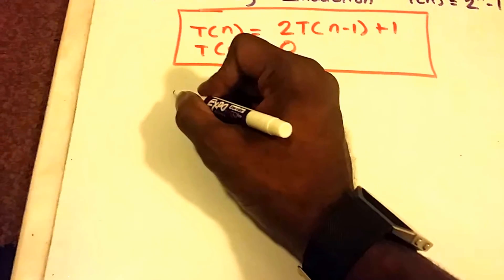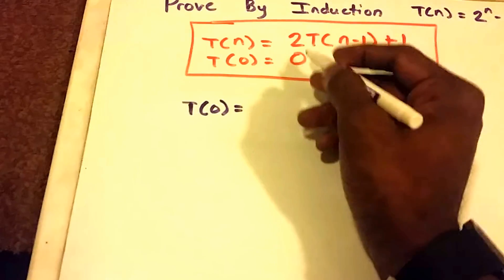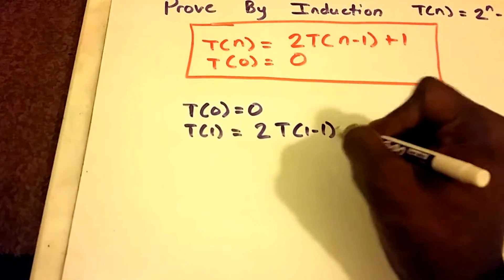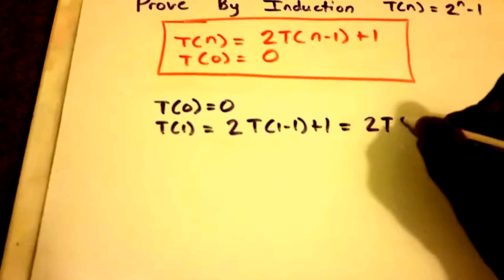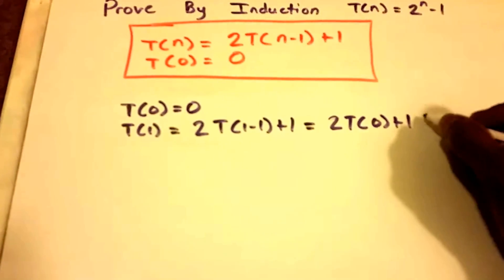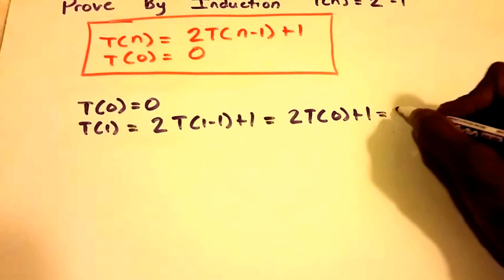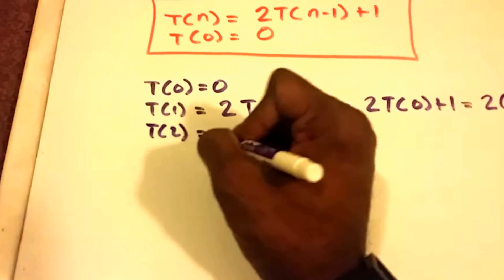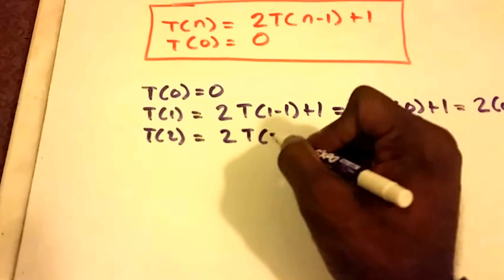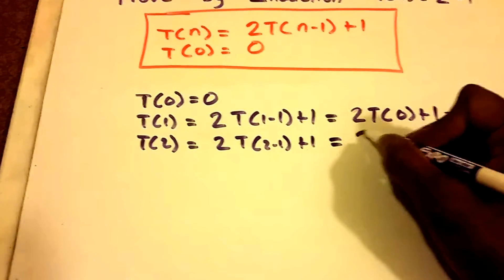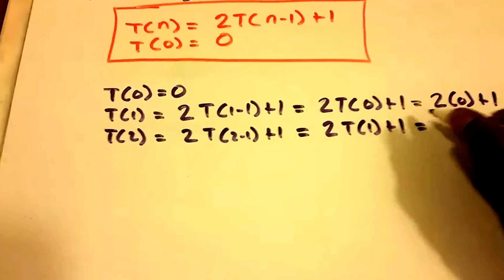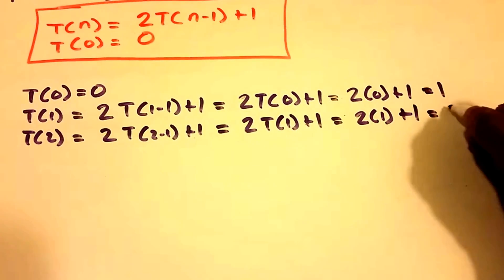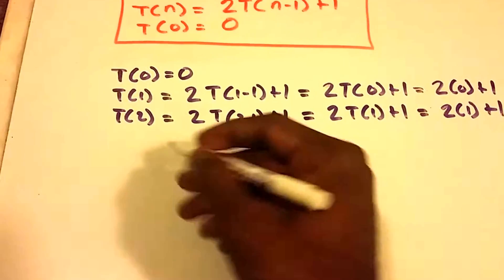Before we start our proof, let's do some checking to see if this is actually true. T(0) is 0 from our base case. For T(1), we get 2 times T(0) plus 1, which is 2 times 0 plus 1, so T(1) equals 1. For T(2), we get 2 times T(1) plus 1, which is 2 times 1 plus 1, giving us 3.